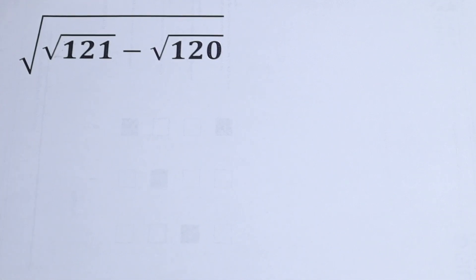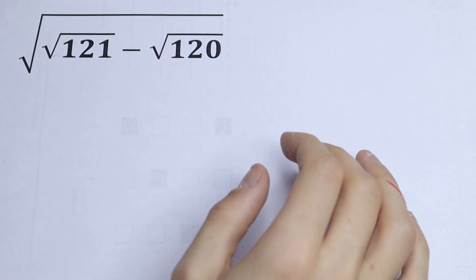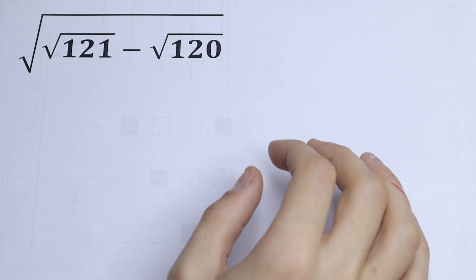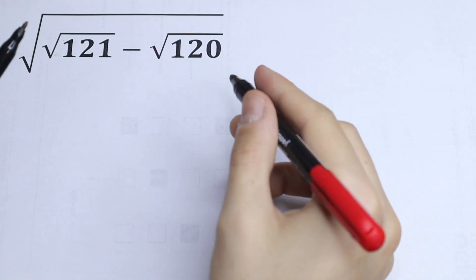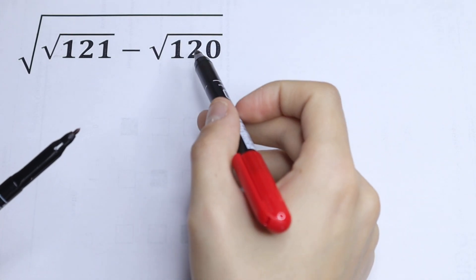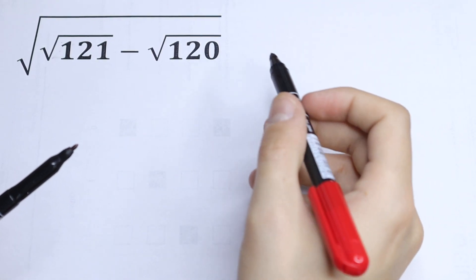Hello everyone! Welcome back to MathMode. Here we have an interesting algebra question: the square root of the square root of 121 minus 120. How can you do this?